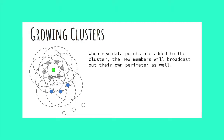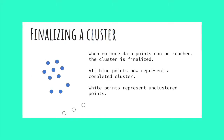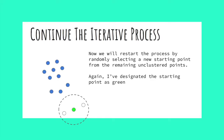These new members will cast out their own perimeter and search for even more members to join the cluster, but in this case, they don't find any. Because new members are not found, this cluster is finalized. I have turned all members of the first cluster blue. However, you will notice there are three white points still unclustered. Now we will restart the process by randomly selecting one of the remaining unclustered points. This iterative process continues until every unclustered data point has been looked at.